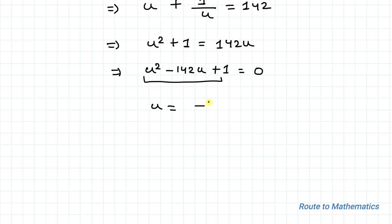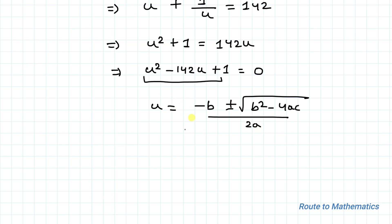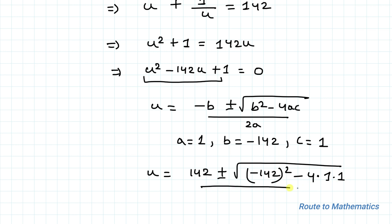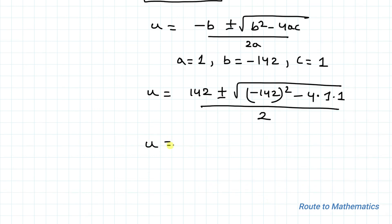We will apply the quadratic formula: u equals (minus b plus or minus √(b² minus 4ac)) divided by 2a. Here a equals 1, b equals minus 142, and c equals 1. Putting in the values: u equals (142 plus or minus √(142² minus 4 times 1 times 1)) divided by 2.